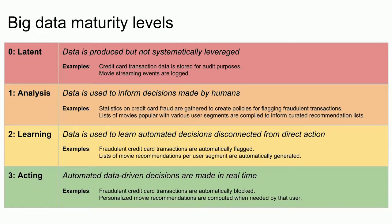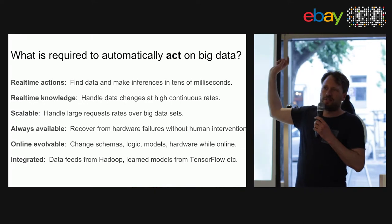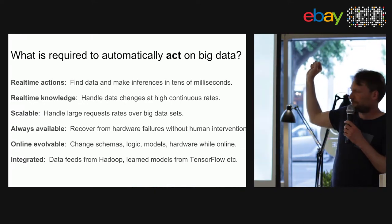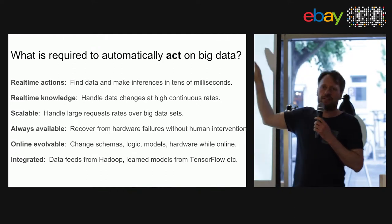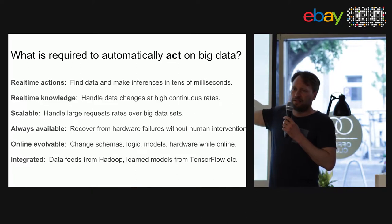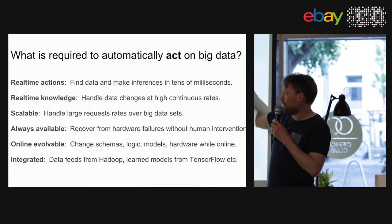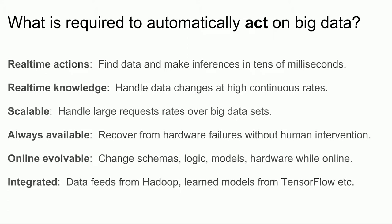That's not possible if you do everything offline, because you'd need to compute a list for every possible user. If you do it in real time, you only compute what you actually need based on what users are doing. To use big data to make decisions in real time requires very low latency — typically a budget of around 100 milliseconds — handling continuous high-rate changes to the data, and scaling to a large number of requests per second.